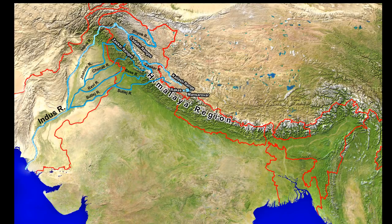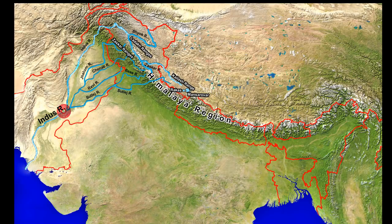The Indus system of rivers comprises the Indus and its five main left bank tributaries: Jhelam, Trinab, Ravi, Bees and Satlaj, which combine into one river near Mithankot in Pakistan and finally drain into the Arabian Sea.